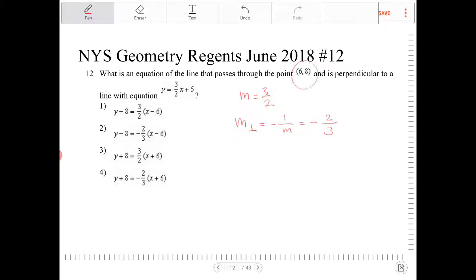Because we're trying to have that line that's perpendicular to the given pass through (6, 8), we're going to write this using point-slope form, which has this template. We're going to substitute in (6, 8). So y minus 8 is equal to negative 2 thirds times x minus 6.